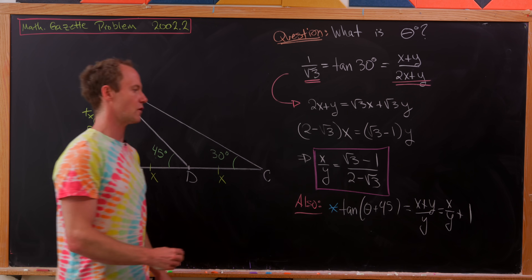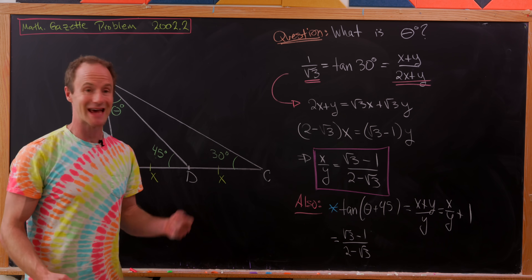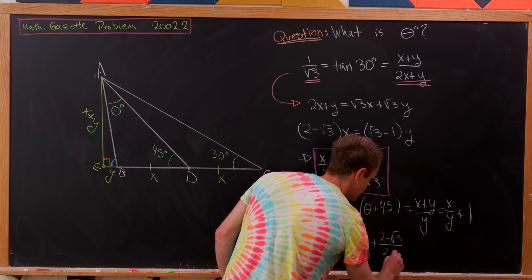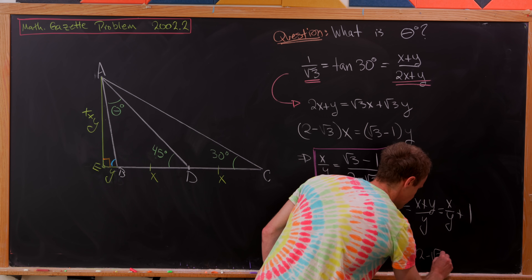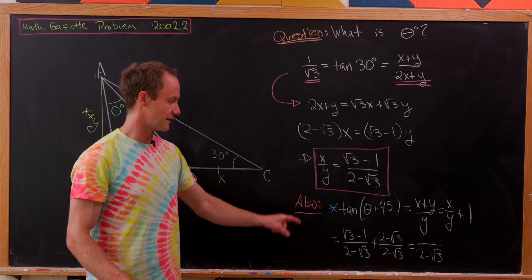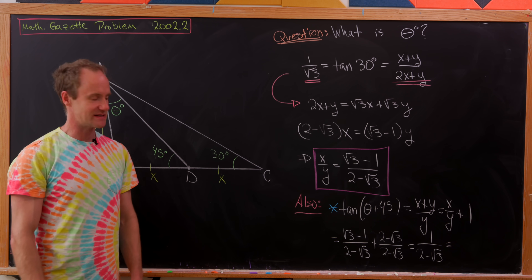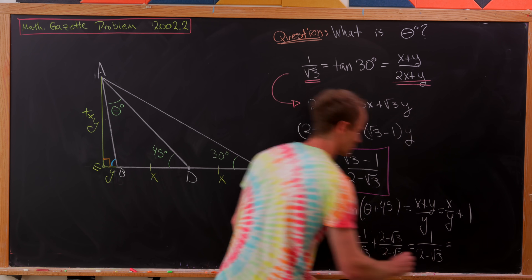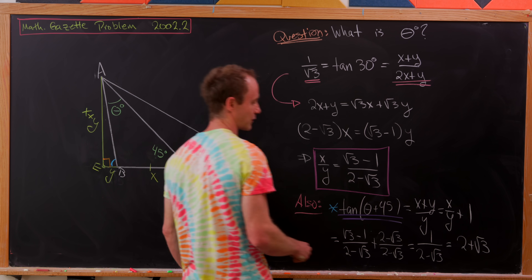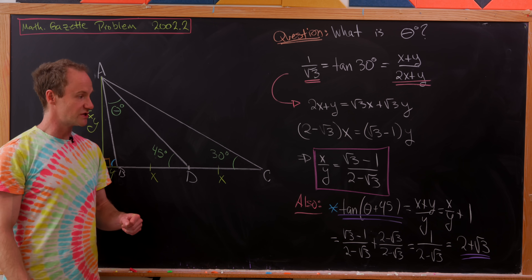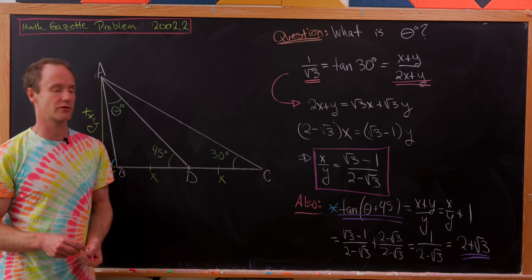We know x/y, so this is (√3 − 1)/(2 − √3) plus 1, where we write 1 as (2 − √3)/(2 − √3). In the numerator, the √3 terms cancel and −1 + 2 = 1, giving 1/(2 − √3). Rationalizing by multiplying by (2 + √3)/(2 + √3), we get 2 + √3. So tan(theta + 45) = 2 + √3.